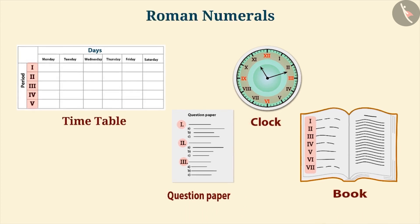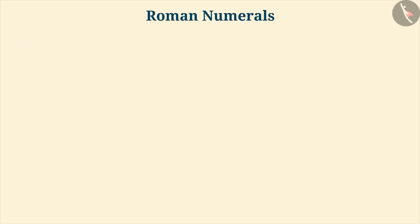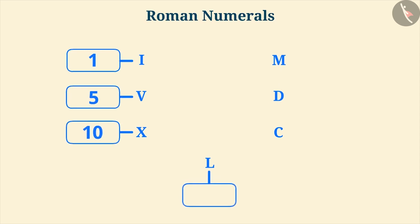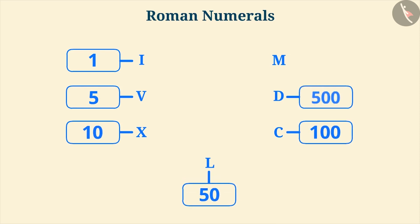Roman numerals are generally expressed with the help of these seven symbols, which represent 1, 5, 10, 50, 100, 500 and 1000. There are certain rules to use these symbols. Let us understand them.